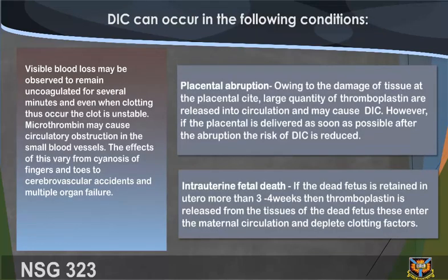DIC can occur in the following conditions: visible blood loss may be observed to remain uncoagulated for several minutes, and even when clotting does occur the clot is unstable. Microthrombi may cause circulatory obstruction in the small blood vessels. The effect of this varies from cyanosis of fingers and toes to cerebrovascular accident and multiple organ failure.